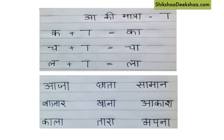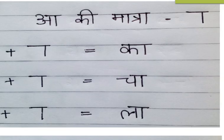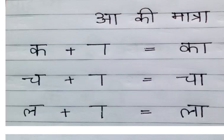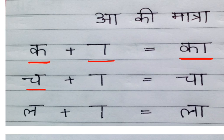A ki matra — this is the matra of A. When we attach this matra to any letter, we pronounce that letter with A. For example, Ka becomes Ka, Cha becomes Cha, and La plus A ki matra becomes La.